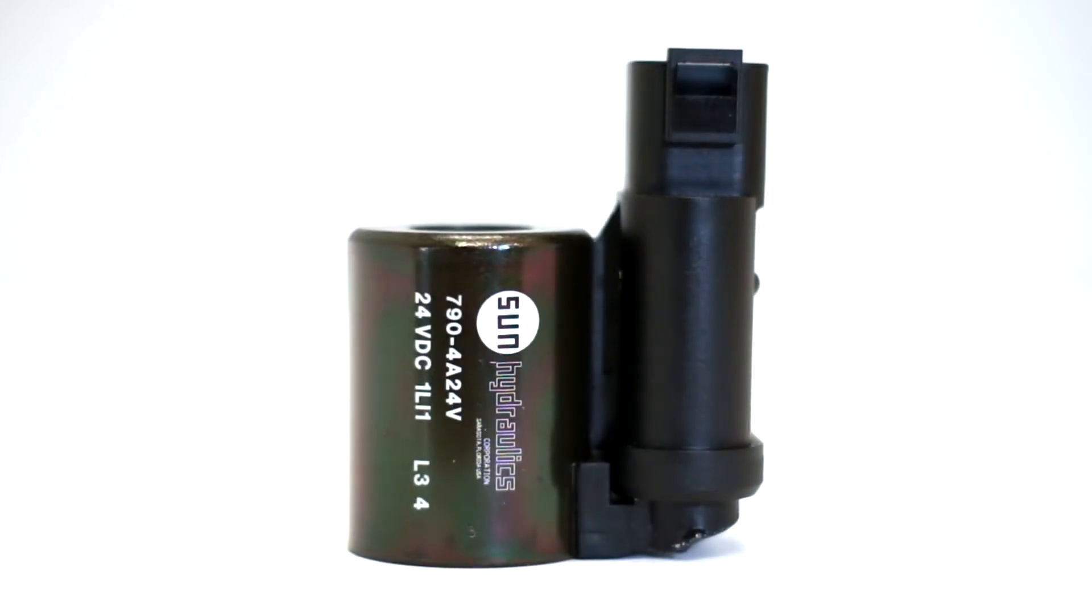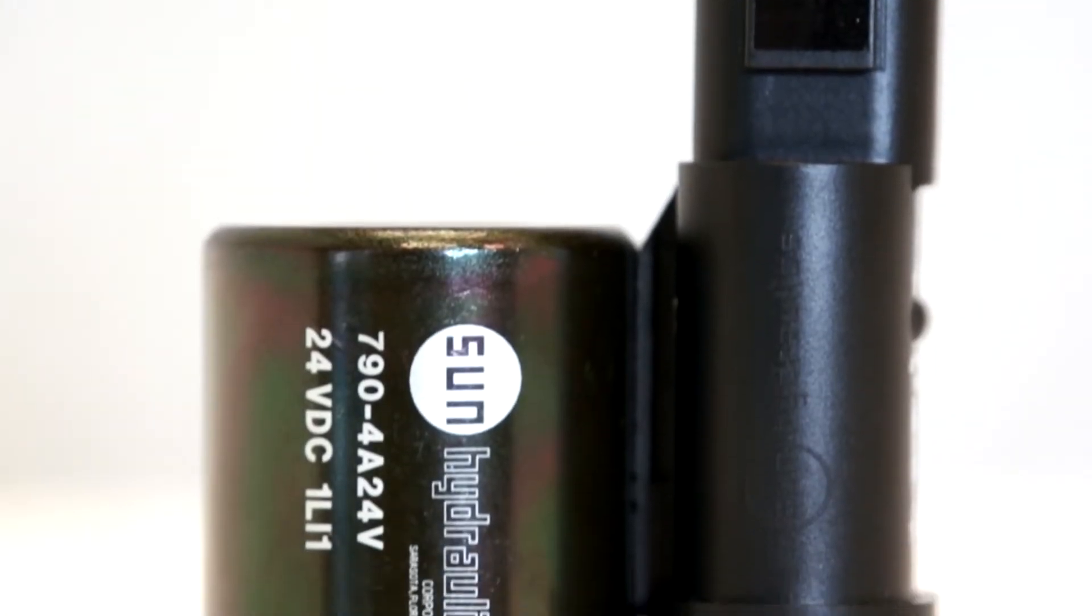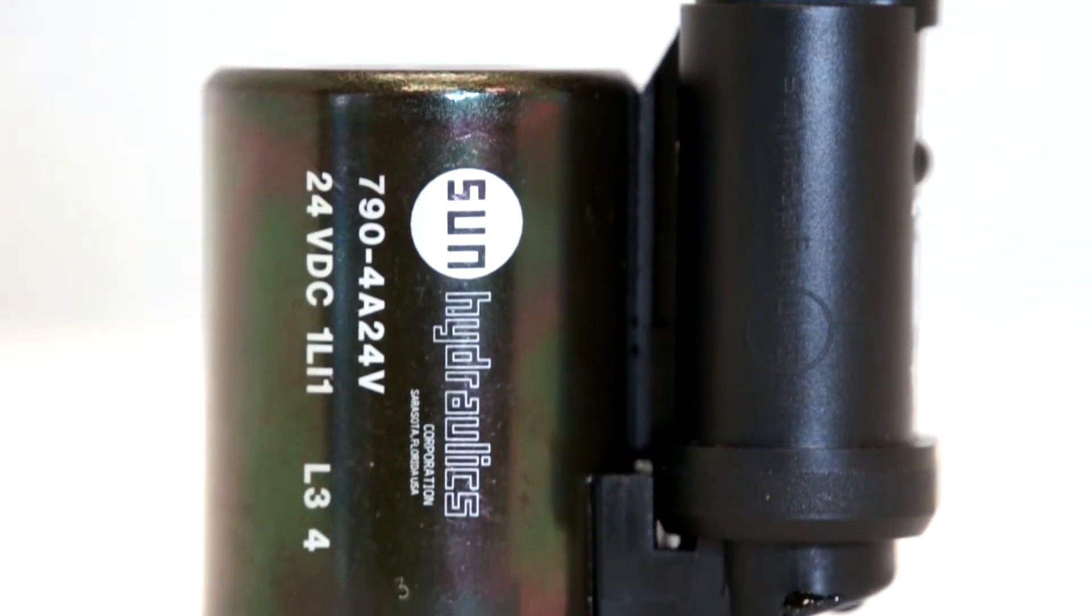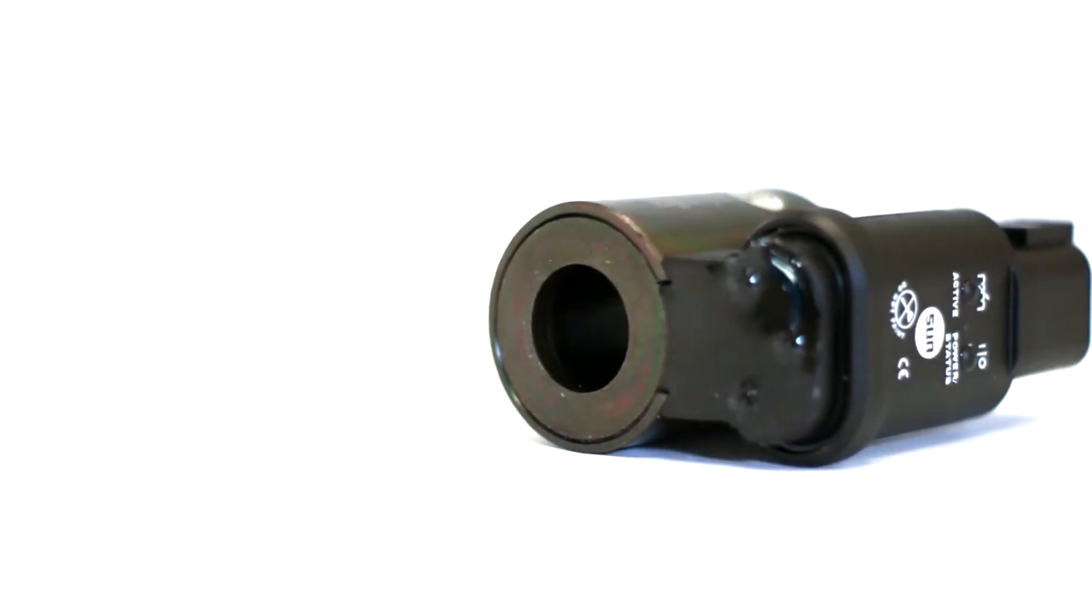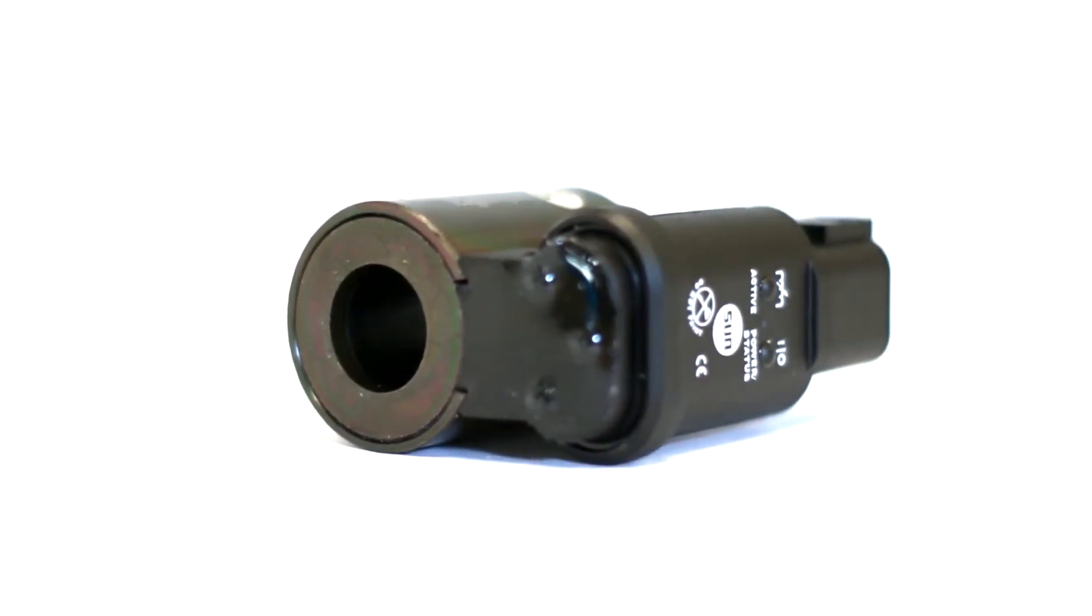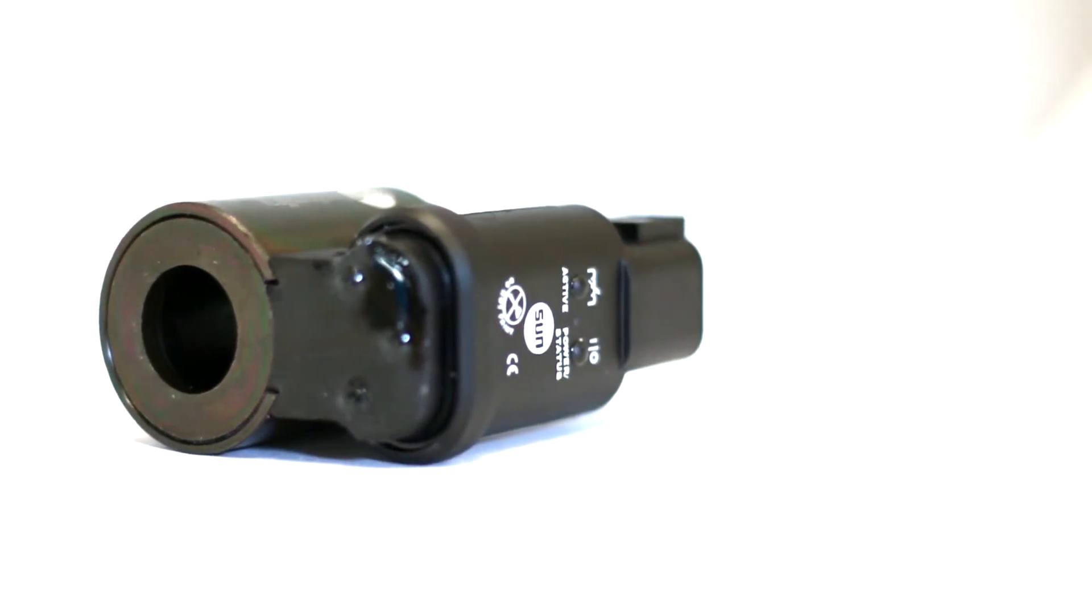This is Sun's Embedded Proportional Amplifier. What we have done is make a completely integrated electro-hydraulic solution by making the coil and amplifier one piece. The amplifier is potted inside a housing for vibration and water intrusion resistance.